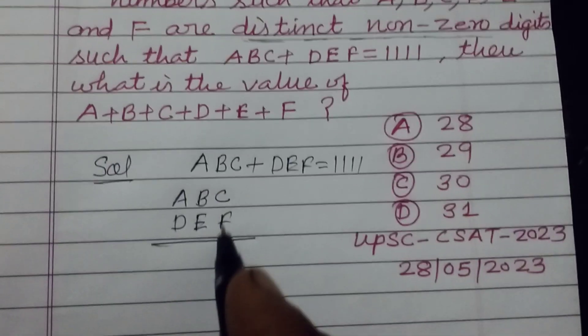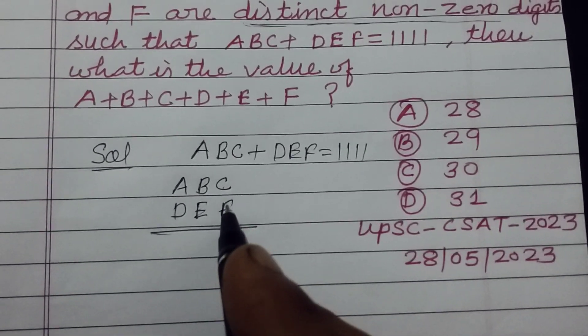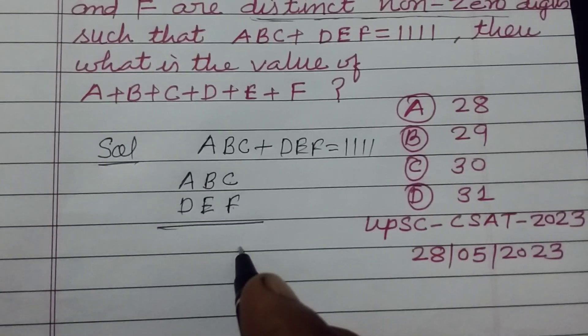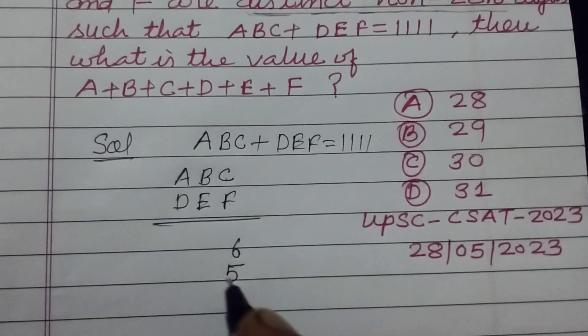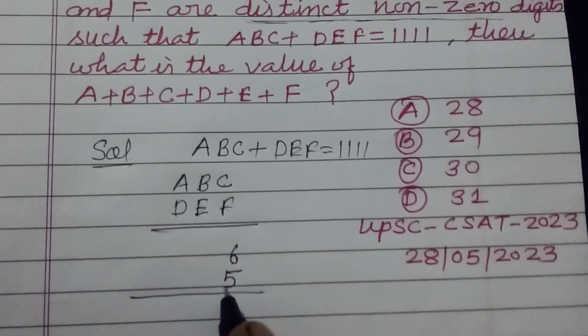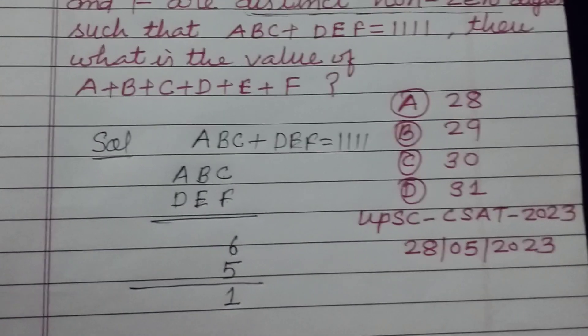So we write that C and F are 6 and 5. Then 6 and 5 sum is 11, so 1 carry. Here 1 carry.